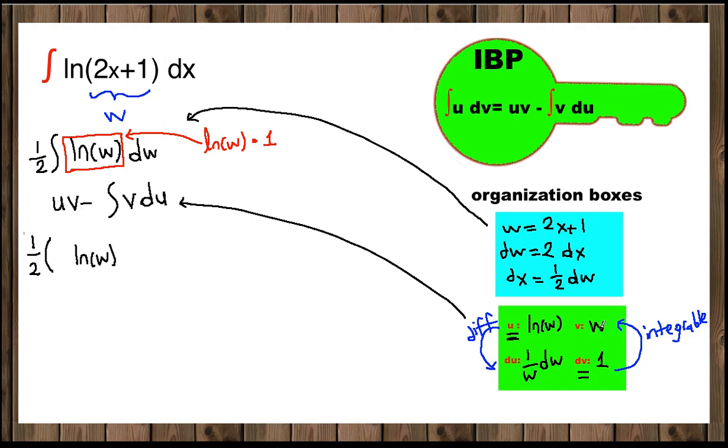And our v is w. Let's put it in front of ln and minus integral of v, which is w, times du. du is 1/w dw. Here we can do the necessary simplifications. w cancels w. We have 1/2 w ln(w) minus integral 1 dw.